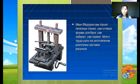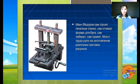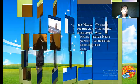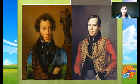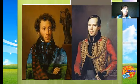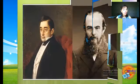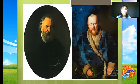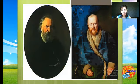Иван Фёдоров сам строил печатные станки, сам отливал формы для букв, сам набирал, сам правил. Много труда ушло на изготовление различных заставок и рисунков. Москва – колыбель русской печатной книги и русской литературы. Здесь родились Пушкин и Лермонтов, Грибоедов и Достоевский, Герцен и Островский и многие другие замечательные писатели.